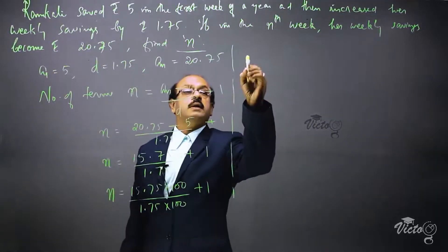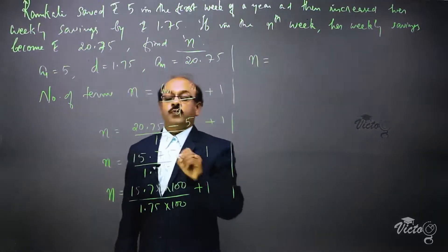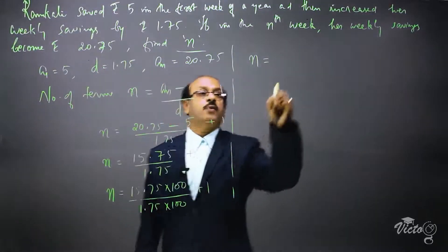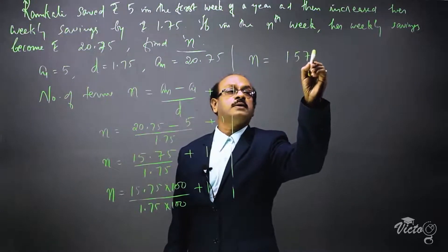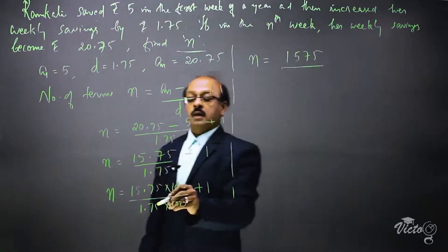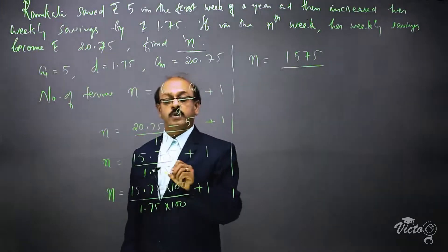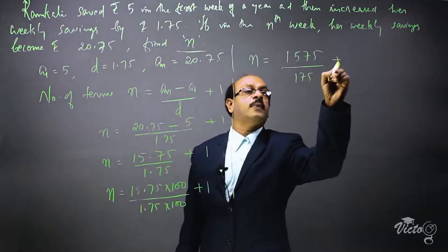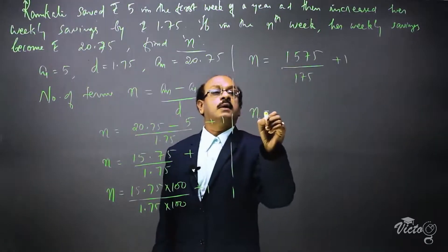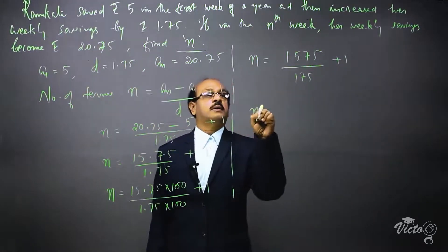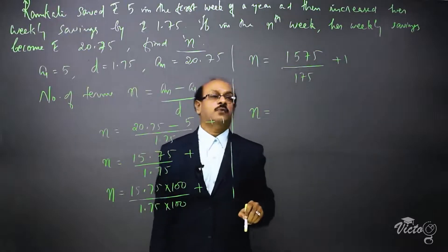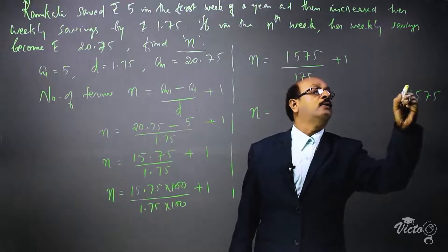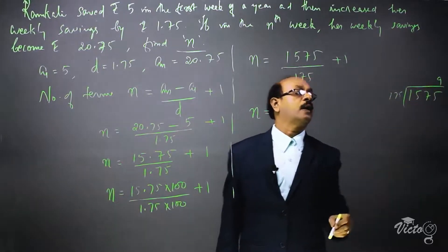15.75 × 100 = 1575 and 1.75 × 100 = 175. So n = 1575 / 175 + 1. Now dividing 1575 by 175 gives us 9.